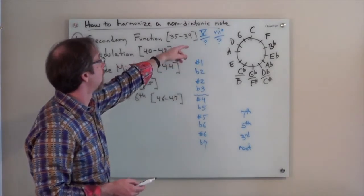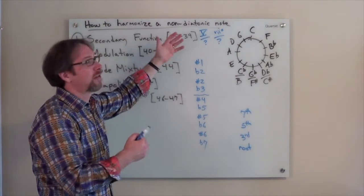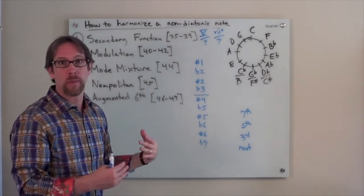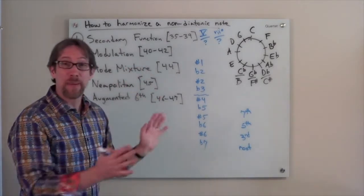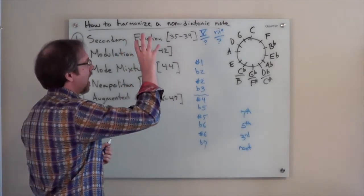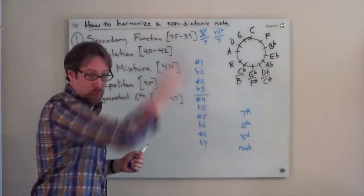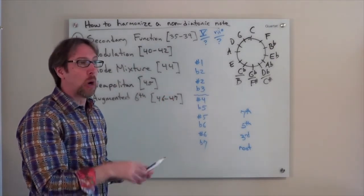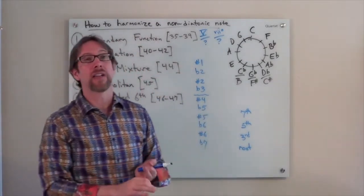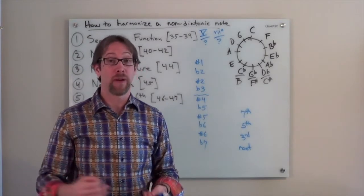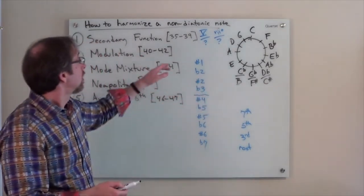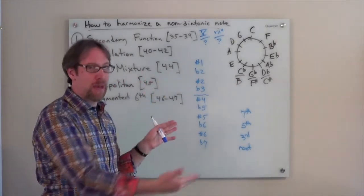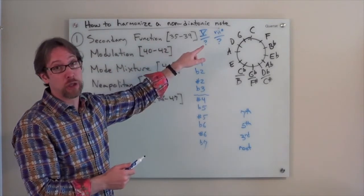Secondary functions are when we're talking about five of some diatonic chord or a seven diminished of a diatonic chord to our home key of C major. We're going to take a non-diatonic note, then we'll need a non-diatonic chord because you can't harmonize a non-diatonic note with a diatonic harmony. The only way you can have a pitch that's not in the scale and not use non-diatonic harmonies is to treat it as a non-chord tone. But if you want to harmonize that, we have to use a non-diatonic chord as well. But we're not going to chain them. We're going to go right back into our key.